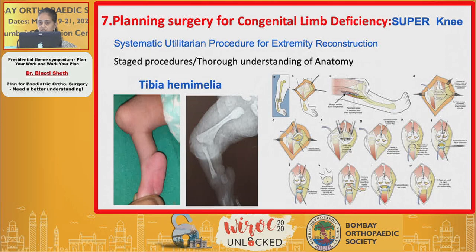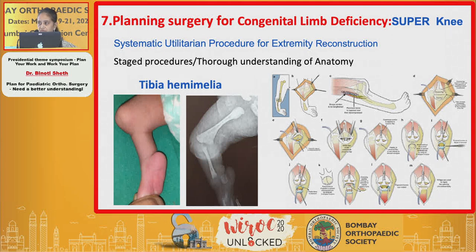For congenital limb deficiencies like tibial hemimelia, the pre-operative schematic plan looks very complex. These are correctly termed 'super surgeries' — the Systematic Utilitarian Procedure for Extremity Reconstruction — including SUPER hip, SUPER knee, and SUPER ankle surgeries. When planning these, perform them in staged procedures, have a thorough understanding of anatomy, take help from colleagues from other specialties, and do not take them for granted.